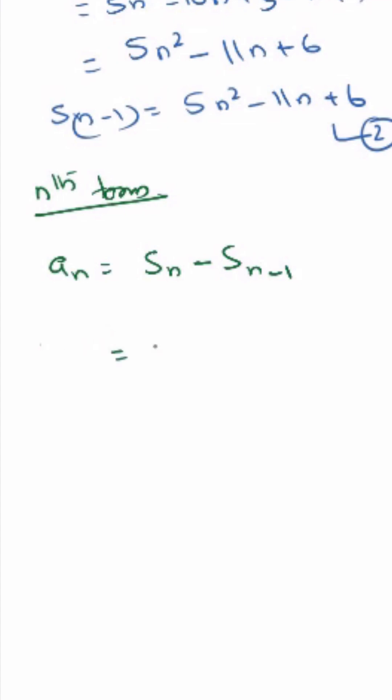a_n is equal to 5n square minus n minus bracket 5n square minus 11n plus 6. That's equal to 5n square minus n minus 5n square plus 11n minus 6.